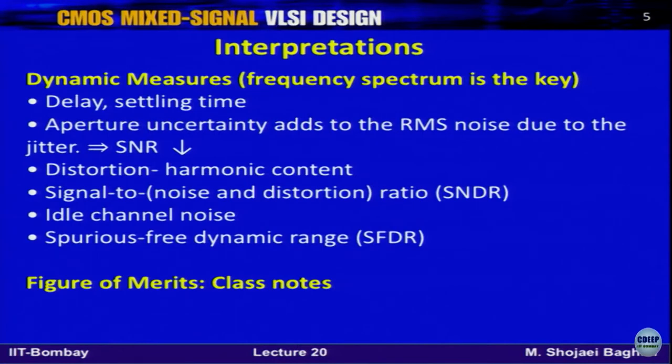One thing not yet well explained is aperture error. We have always assumed the sampling clock has an ideal edge. Practically, there is jitter — every sample will not be captured at exactly t seconds from the previous one. It will be t plus delta_t, where delta_t is a random variable with some RMS value. That is the jitter.